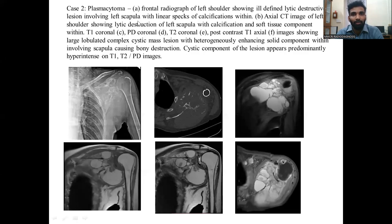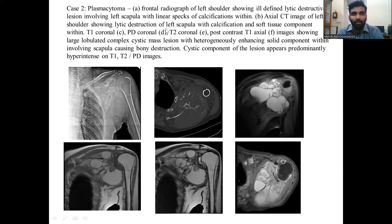Case of plasmacytoma. Frontal radiograph of the left shoulder shows an ill-defined lytic destructive lesion involving the left scapula with faint specks of calcification within. Axial CT of the left shoulder shows lytic destruction of the left scapula with calcification and soft tissue component. T1 coronal, proton density coronal, T2 coronal, and post-contrast T1 axial images show a large lobulated complex cystic mass lesion with heterogeneously enhancing solid component involving the scapula causing bony destruction. The cystic component appears predominantly hyperintense on T1, T2, and proton density-weighted images.